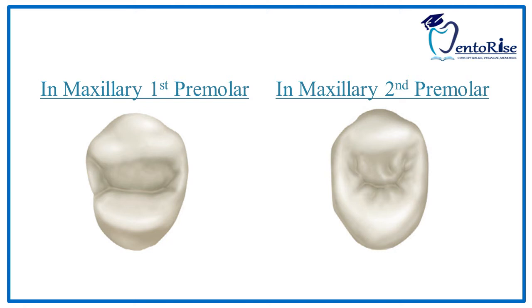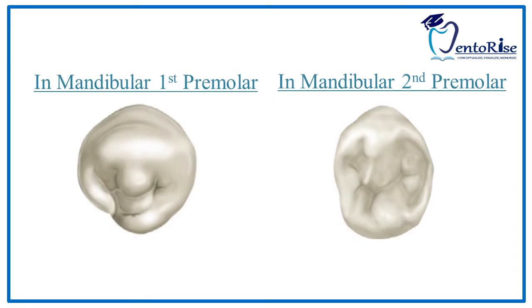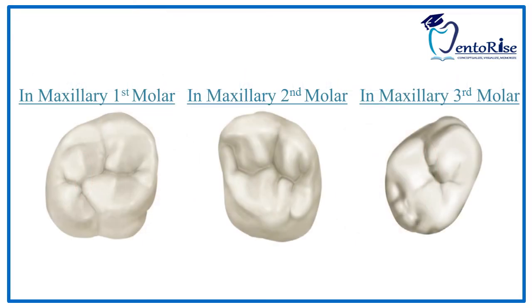Now coming to the posterior teeth, the premolars and molars — the marginal ridges are present on the occlusal surface. The marginal ridge facing towards the mesial side is called the mesial marginal ridge, marked in red, and the marginal ridge facing towards the distal side is called the distal marginal ridge, marked in green. You can observe the same pattern in mandibular premolars and in maxillary and mandibular molars. The only difference is that these marginal ridges are present on the lingual surface in anterior teeth and on the occlusal surface in posterior teeth.